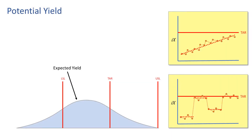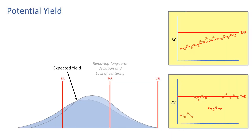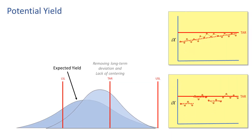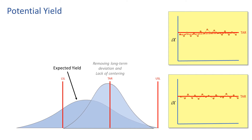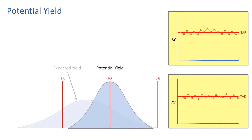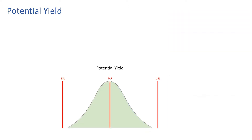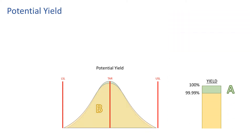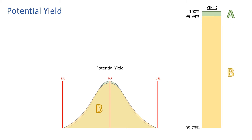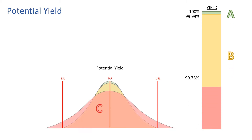Enact grade consists of two components. Potential yield is a measure of a process's expected yield, assuming perfect centering on the target, using the current level of variability. It tells you how well the process could be doing. This component is graded as A, B, or C.